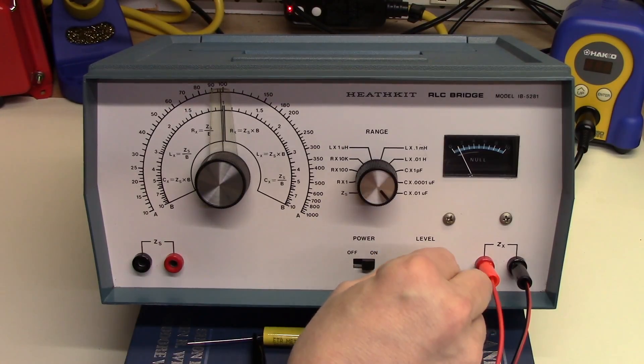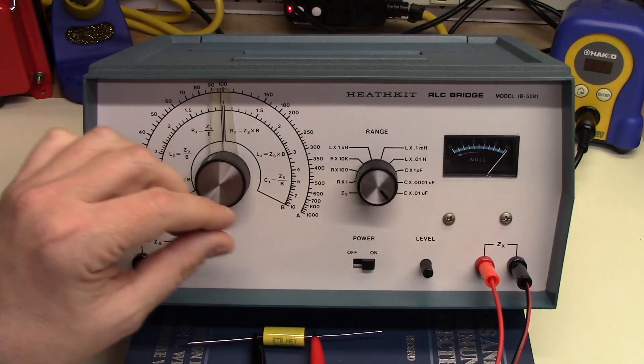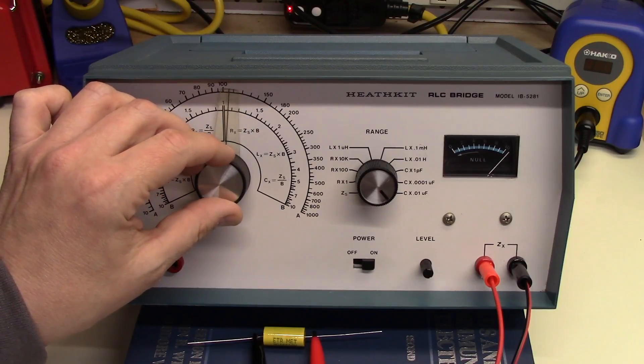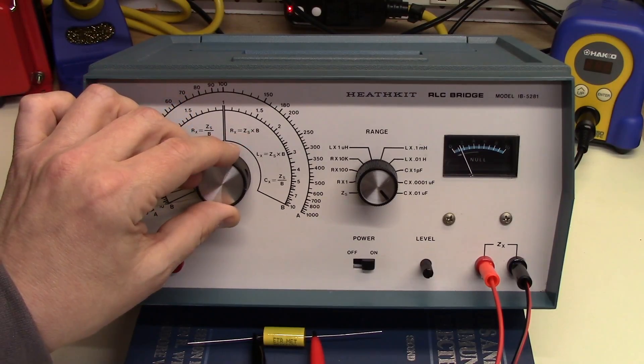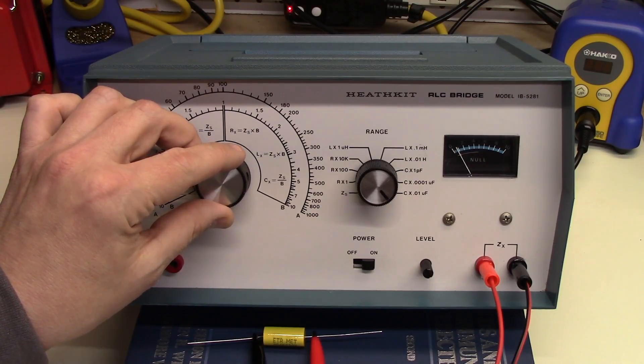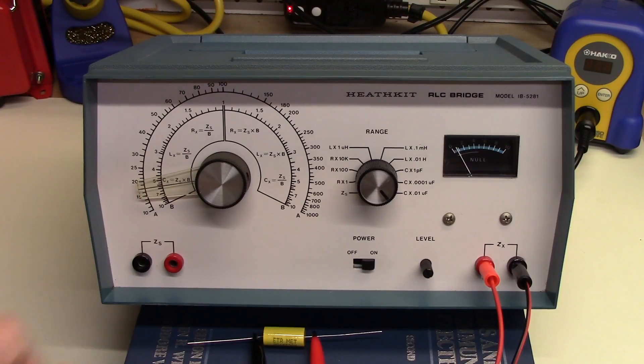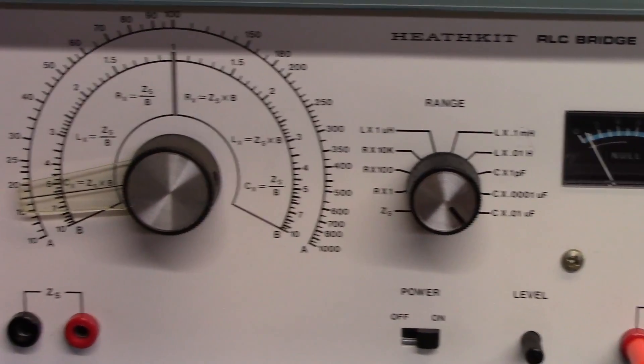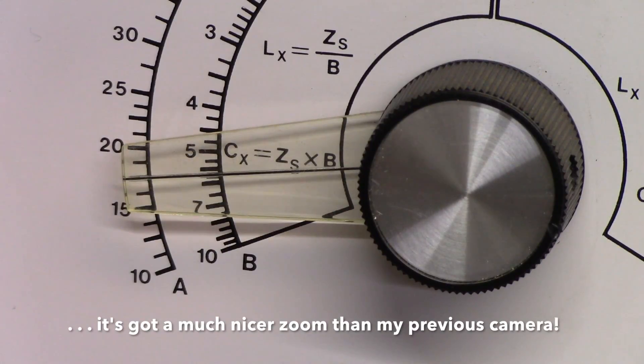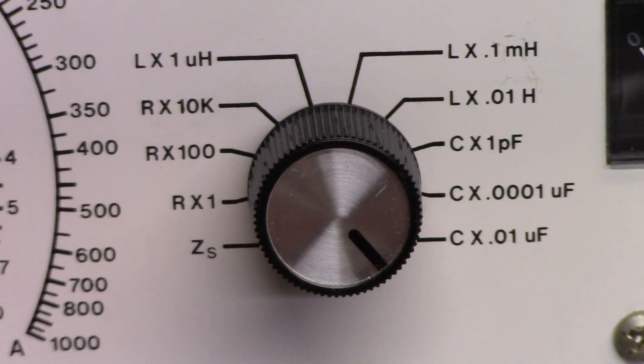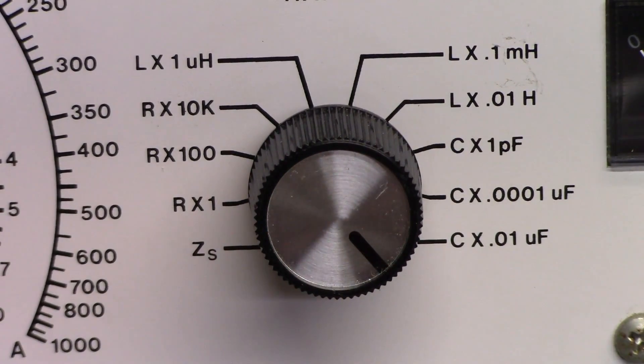The next thing that you do is you set the meter so that it's very high over here on the right. And you now adjust this so that you get a null. Okay, so we're approaching the null. And we've just gone past the null. So this over here on the A label reads between 15 and 20. And the scale here is times 0.01 µF, so that would be between 0.15 and 0.2 µF.